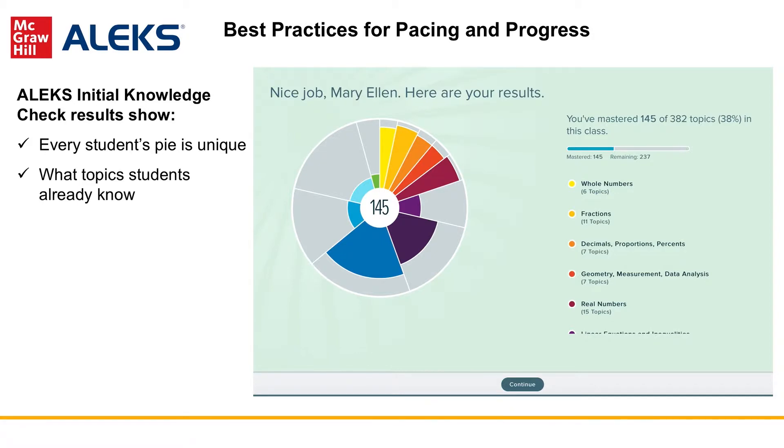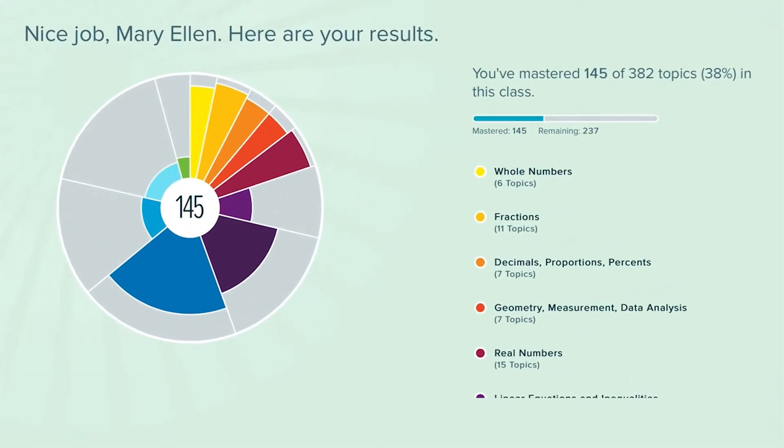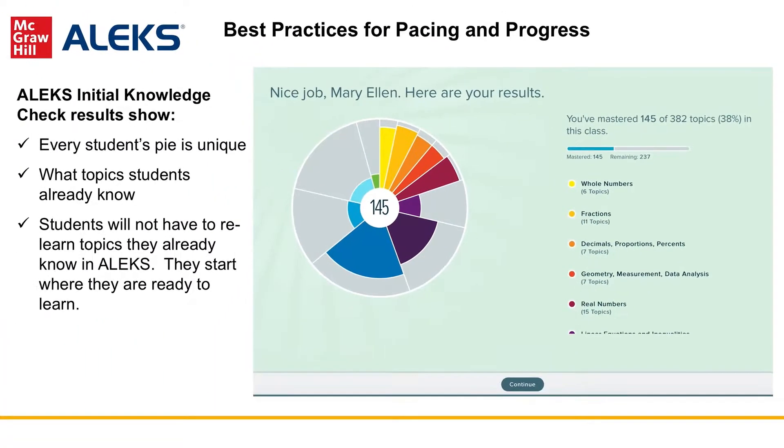The Pi visual displays what students have already mastered and what they need to learn in their course. It's helpful to share with students that each student's Pi is unique, and you'll work with them to fill in their gaps. Remind students that topics mastered are completed homework before the class even starts.